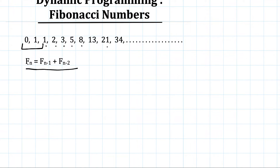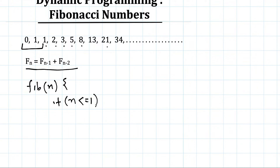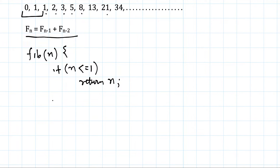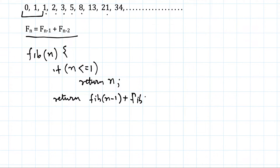Let's see how we will solve this recursively. If n is less than or equal to 1, then we return n — so for 0 it returns 0, for 1 it returns 1. Otherwise we return Fib(n-1) plus Fib(n-2). This looks very simple but it's not a very good solution, and we will see why.